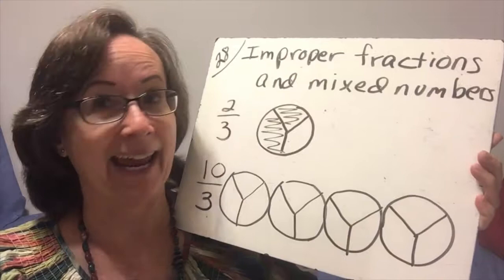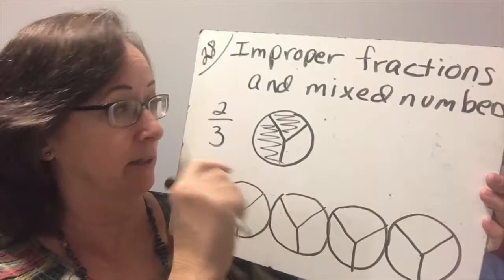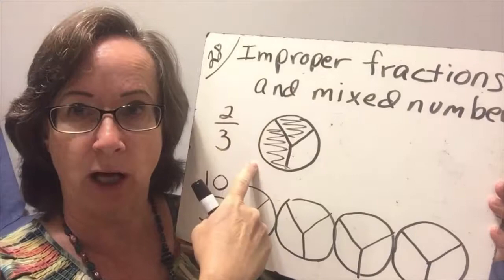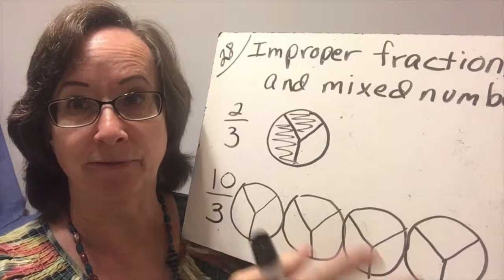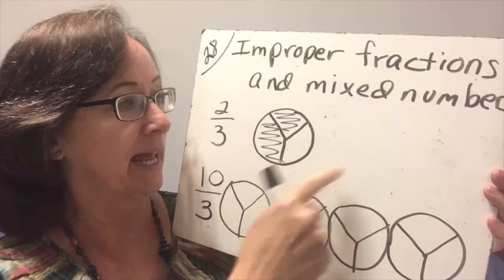So what I have here is a proper fraction. In a proper fraction, the numerator is smaller than the denominator. In other words, there is no simplifying that could be done. It is less than 1. It is a part that's less than 1, and I could represent it on one pie.